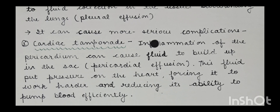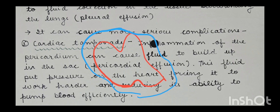One complication is cardiac tamponade. Inflammation of the pericardium can cause fluid to build up in the sac — that is, pericardial effusion. Referring to a diagram of the heart and pericardium: if there is fluid collection and inflammation around the heart, the heart needs to work harder and its ability to pump blood is reduced.